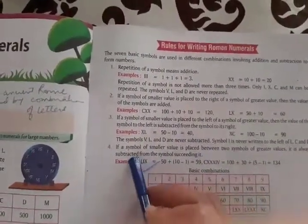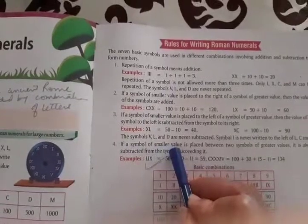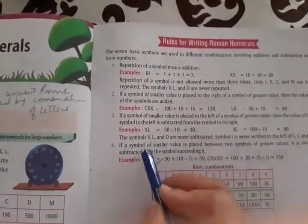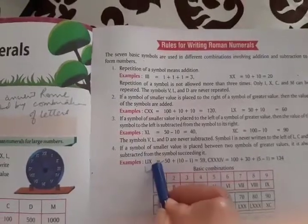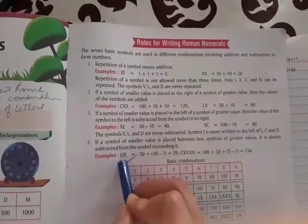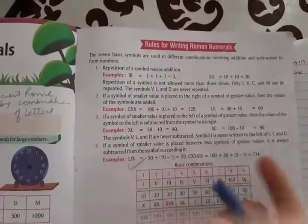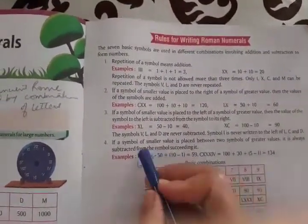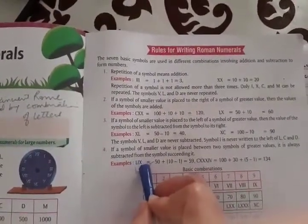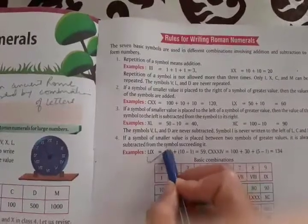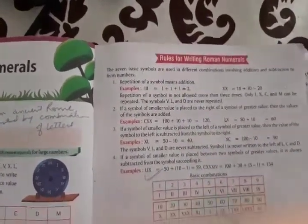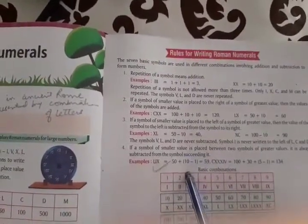The last rule: if a symbol of smaller value is placed between two symbols of greater values, it is always subtracted from the symbol succeeding it. So 50 plus 10 minus 1 equals 9, then 50 plus 9 equals 59. This way we form Hindu-Arabic numbers from Roman numerals.